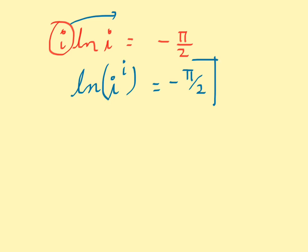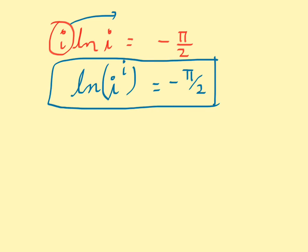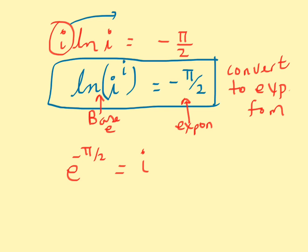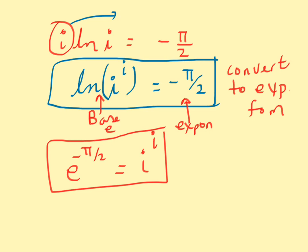That's great because now we have a logarithmic equation, and we're going to convert it to exponential form. Converting to exponential form means identifying the base and the exponent. The base is e, the base for natural logs, and negative π/2 is the exponent. So we rewrite this as e to the exponent negative π/2 is equal to the argument, which is i raised to the exponent i.